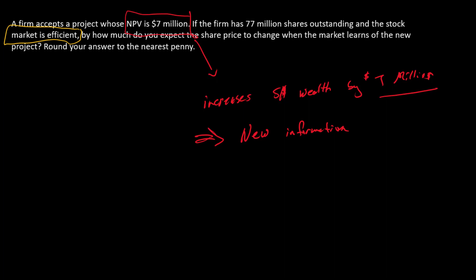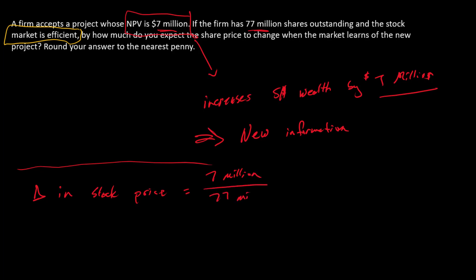One way we can think about this is in terms of the change in stock price. The change in stock price is going to be the change in shareholder wealth divided by the number of shares outstanding. In this problem, we've got a $7 million shareholder wealth change and 77 million shares outstanding. So the change in stock price is $7 million divided by 77 million, which equals about $0.09 per share. The stock price should go up by $0.09 per share.